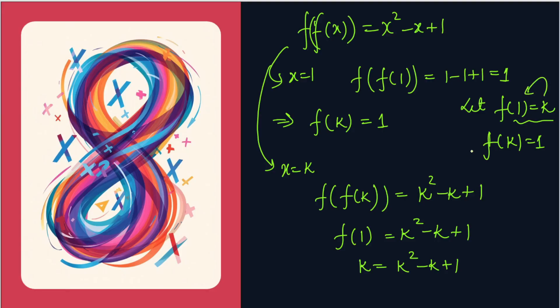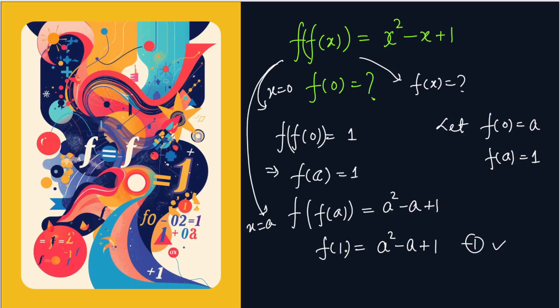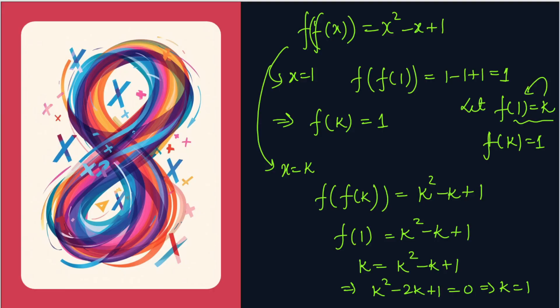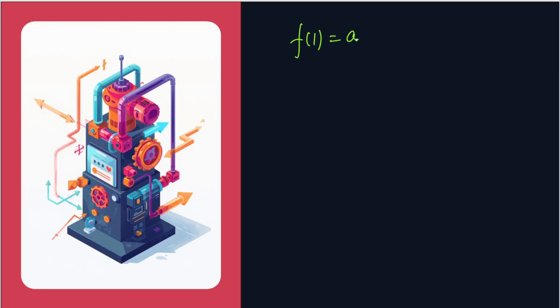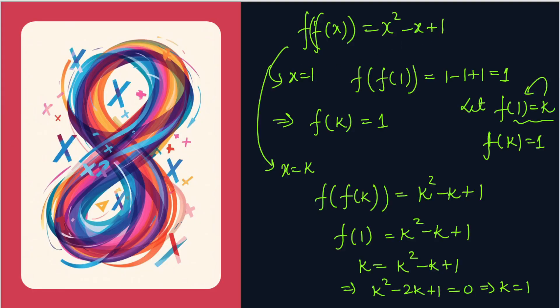From K² - K + 1 = K, we get K² - 2K + 1 = 0. This is a perfect square, so (K-1)² = 0, which implies K = 1. Therefore F(1) = 1. Going back to our earlier result, F(1) = A² - A + 1, and now F(1) = K = 1.